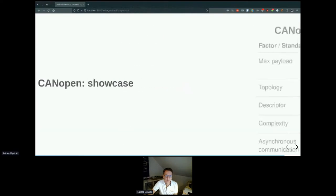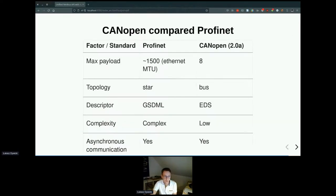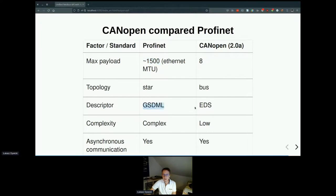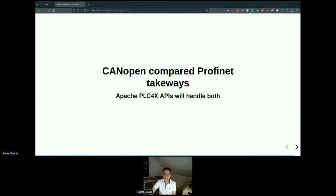One additional comparison between CanOpen and Profinet: CanOpen payloads are minimalistic — just 8 bytes of data per message. For Profinet, the payloads are much bigger — roughly 100 times more. The topology between those is also different, and the descriptor format is again different. The complexity of Profinet is much, much higher. Since it's a younger standard using computer networking, it can do much more compared to CanOpen, which is fairly low in complexity. Both support synchronous and asynchronous communication, but the key takeaway is that both can be handled with the Apache PLC4X APIs.